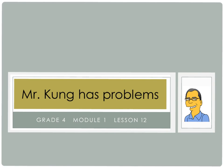Hello, and welcome to another episode of Mr. Kung Has Problems. Tonight we are working on Module 1, Lesson 12, and today we're solving multi-step word problems using the standard addition algorithm modeled with tape diagrams, and we are assessing the reasonableness of our answers by using rounding. So that's a lot of different steps. Let's take a look at one problem today, which we will do in full, as a way of showcasing how we can do each of those things.